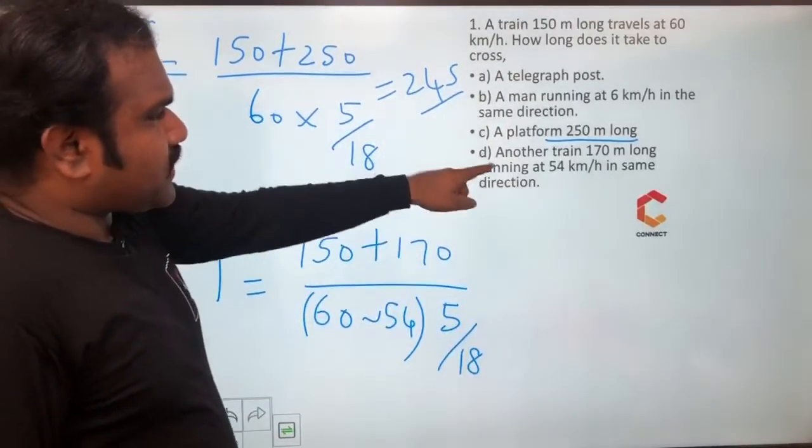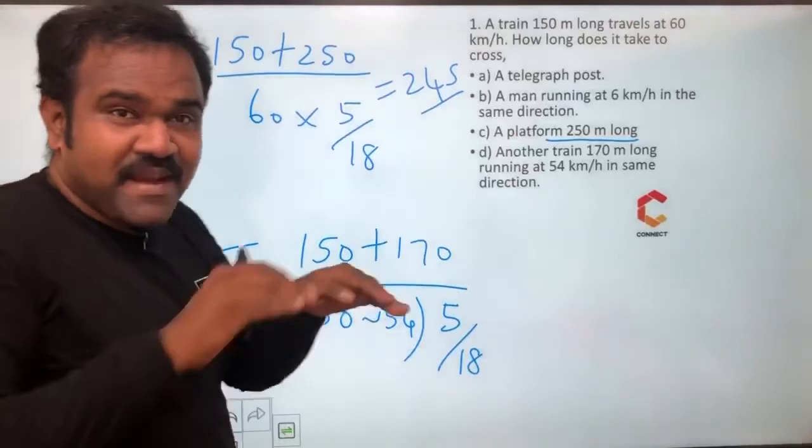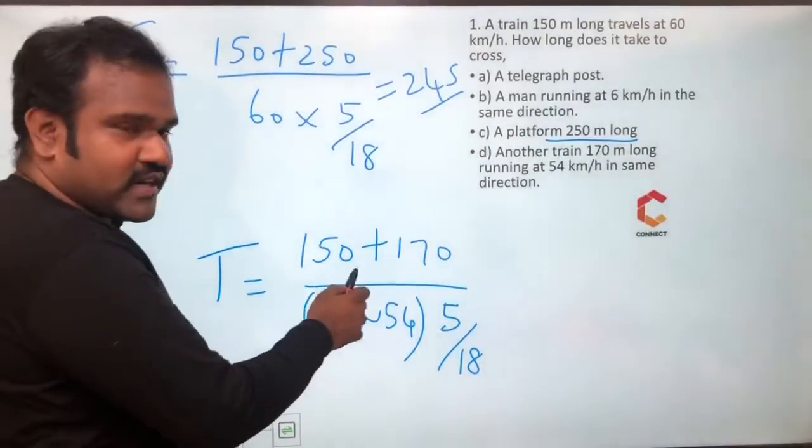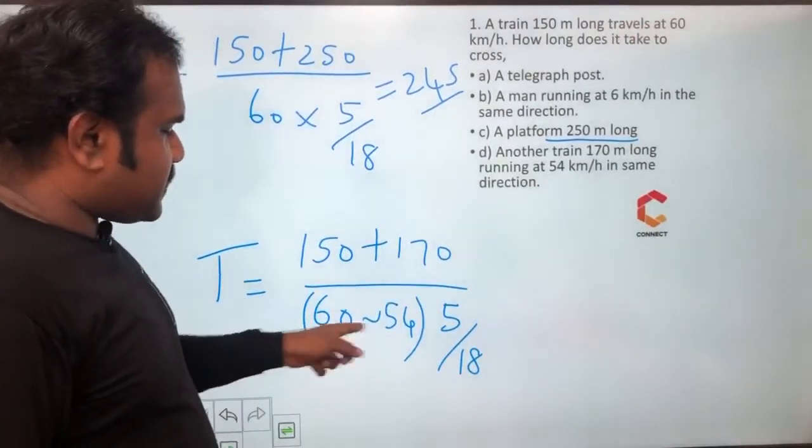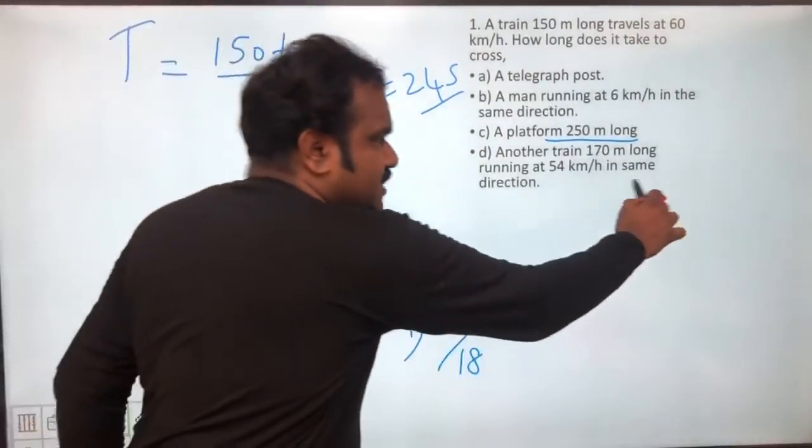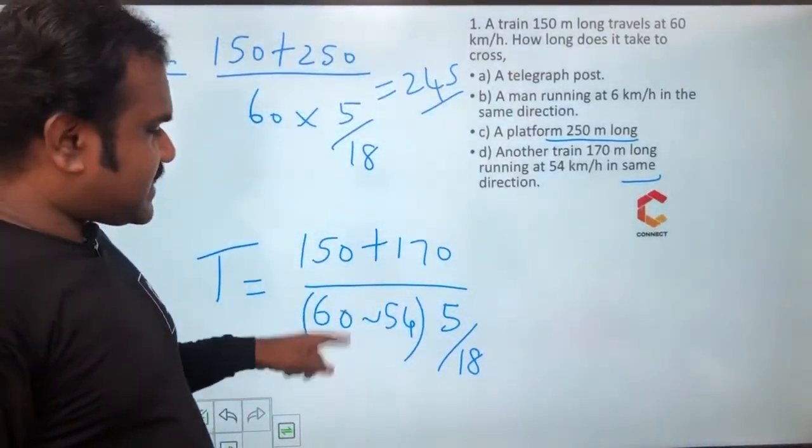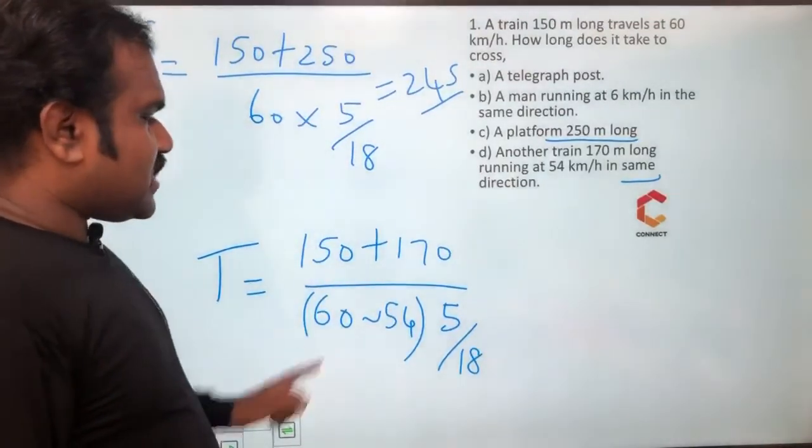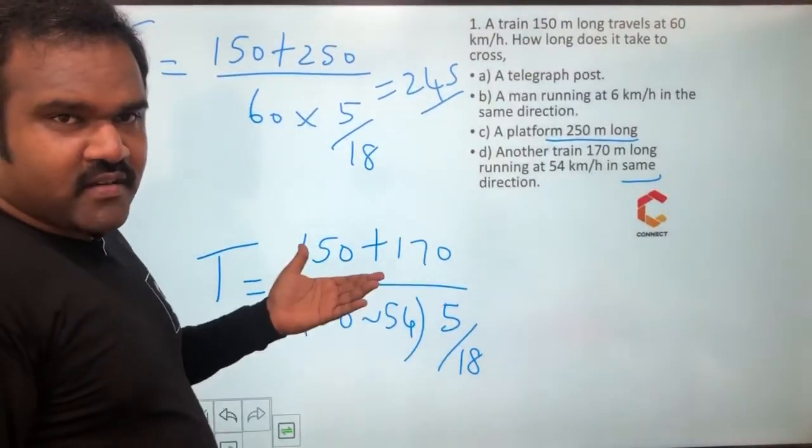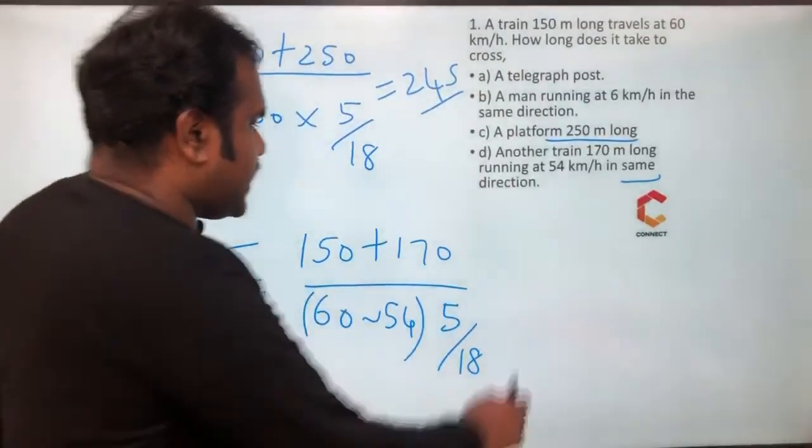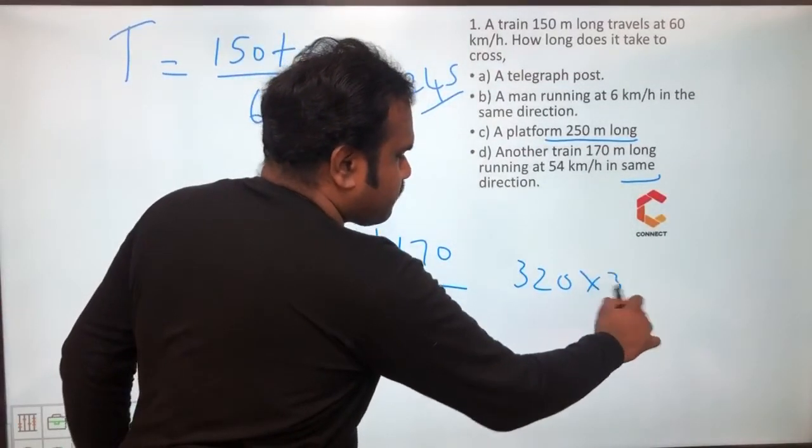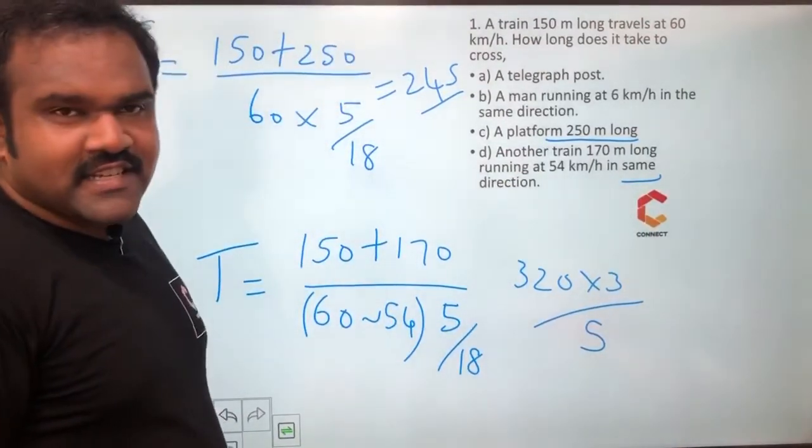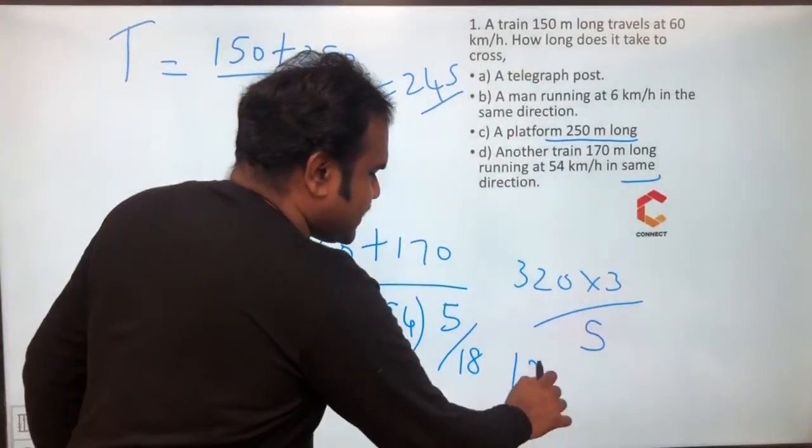And fourth is a train crossing another train 170 m long, running in the same direction. So case number 4, right, 150, 170, length of one train, length of the other train and difference of the speeds. Why difference? Because same direction here. So 60, 54 difference is 6 into 5 by 18, why 5 by 18 for the conversion? So 320 by 6 into 5 by 18, 6 into 5 by 18 means 5 by 3. So 320 into 3 by 5. So 64 into 3, answer is 192 seconds.